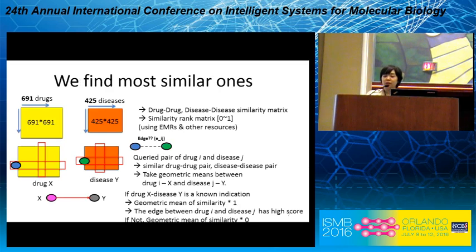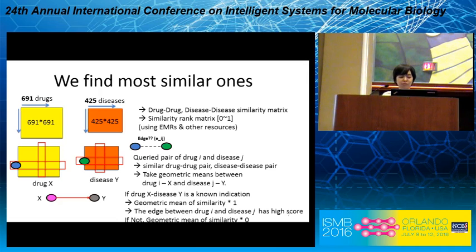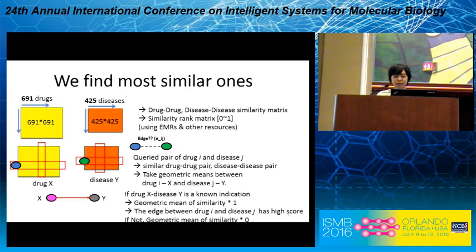This slide gives the basic concept of how we find the most similar drug pair or disease pair and also describes the calculation of edge scores. There are two similarity rank matrices: one for drug-drug pairs and one for disease-disease pairs. The yellow matrix is for drug pairs, and the orange one is for disease pairs. The similarity rank matrix is established based on the labs in the EMR as described, and other genomic features. Imagine a query pair of drug I and disease J; we calculate the edge score between them called E_IJ.